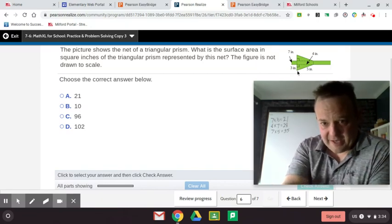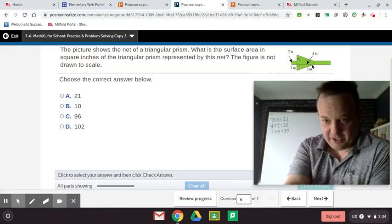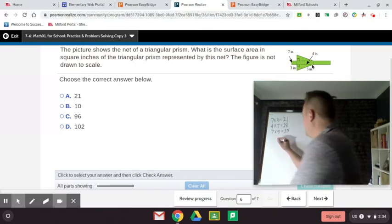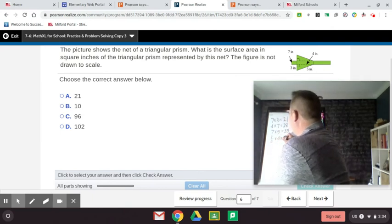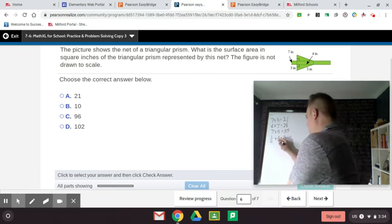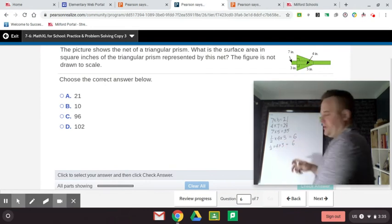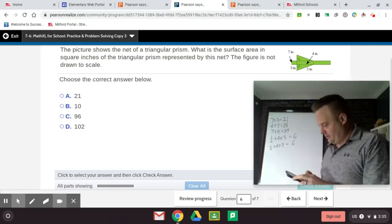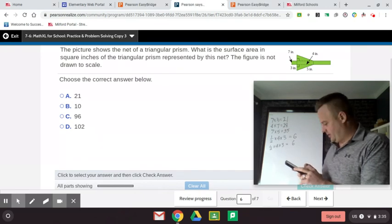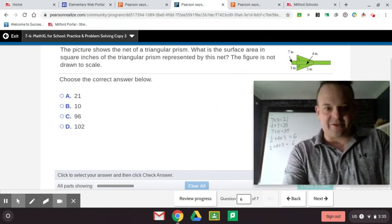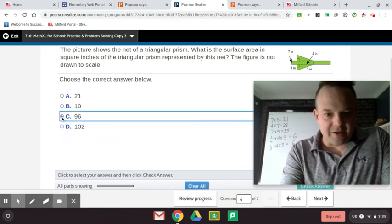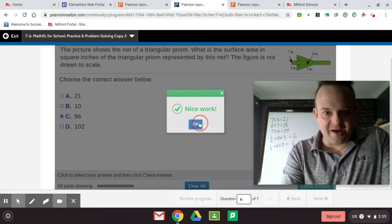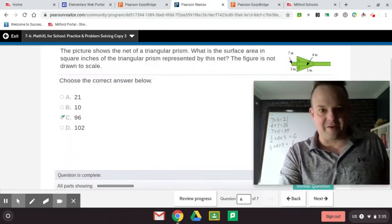Now we need the triangle. The base times the height divided by 2. So 3 times 4 divided by 2. So one-half times 4 times 3. Half of 4 is 2 times 3 is 6. And then we do it again. And now we just add all these up. Bubbles, we're going to add all these up. Alright, 21 plus 28 plus 35 plus 6 plus 6, 96. So it's 96 square. Oh thank goodness, please be right, please be right. Man, I do not know how you guys could have done that without help.